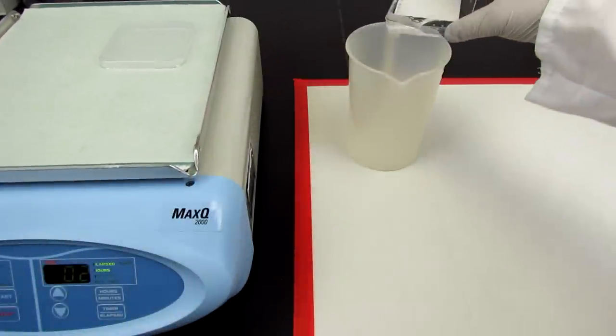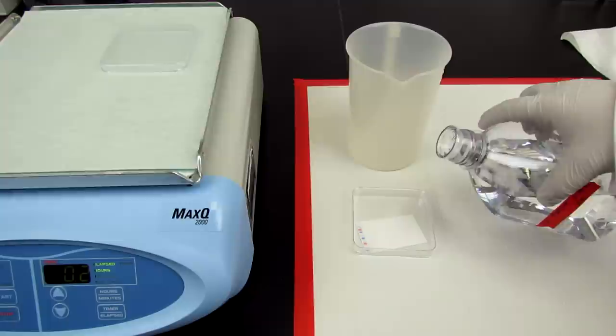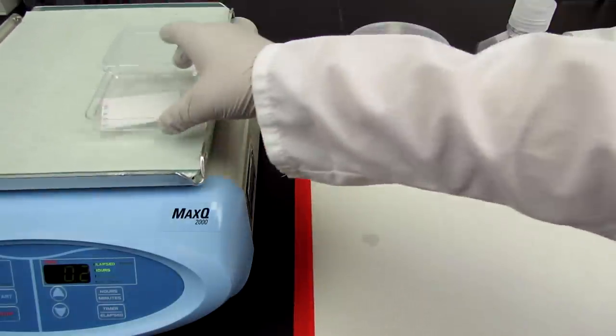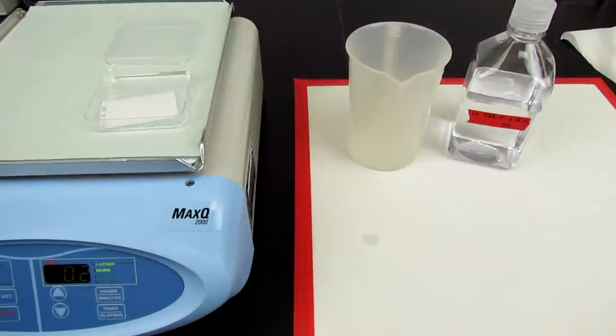After blocking is completed, wash the membrane three times with a wash buffer such as TBST or PBST alone, and the blocked membrane will then be ready to be probed for your proteins of interest.